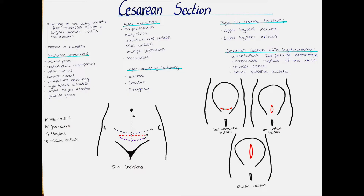Acute scenarios in which the fetus does not receive proper blood flow, like in a placental abruption, are also indications. In cases of multiple pregnancy — so when the mom is having twins or even more babies at the same time — a cesarean section is usually indicated, as well as macrosomia, so if the baby has more than 4 kg.